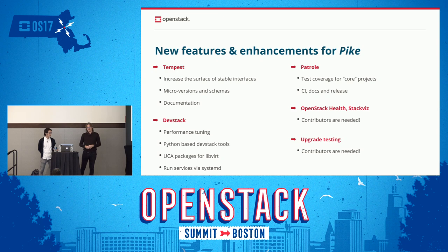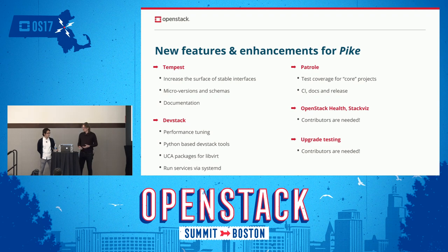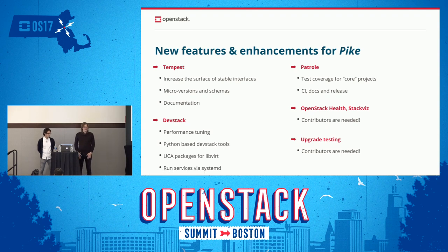OpenStack Health and StackViz are really useful — I personally use them when I have to debug the gate. With OpenStack Health, you can see trends: if you see a failure in a test, you have more context — you can know if it's the first time it fails or if it's a flaky test. It's in a state where it's running and gives you information, but it could do more. We don't have many contributors or bandwidth for these projects, so if you're a JavaScript developer and want to contribute, please reach out to us.